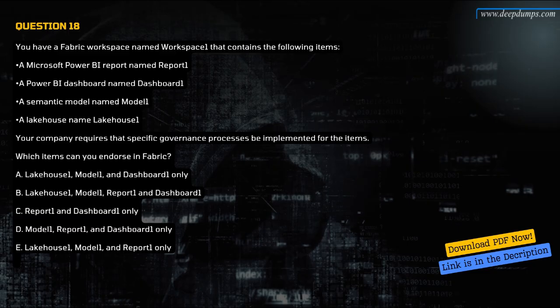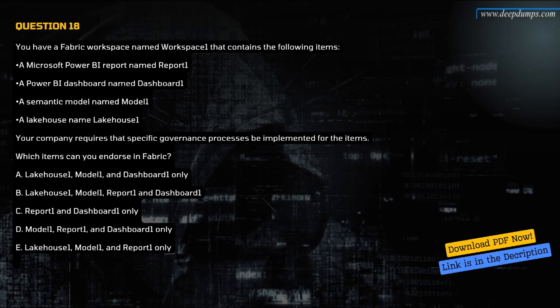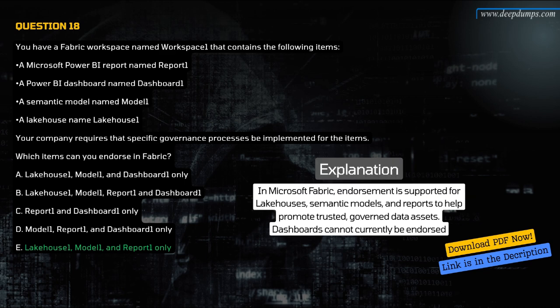Question 18. You have a Fabric workspace named Workspace 1 that contains the following items: a Microsoft Power BI report named Report 1, a Power BI dashboard named Dashboard 1, a semantic model named Model 1, and a lake house named Lakehouse 1. Your company requires that specific governance processes be implemented. Which items can you endorse in Fabric? A. Lakehouse 1, Model 1, and Dashboard 1 only. B. Lakehouse 1, Model 1, Report 1, and Dashboard 1. C. Report 1 and Dashboard 1 only. D. Model 1, Report 1, and Dashboard 1 only. E. Lakehouse 1, Model 1, and Report 1 only. The correct answer is E. Dashboards cannot be endorsed in Fabric. Endorsement is available for lakehouses, semantic models, and reports.